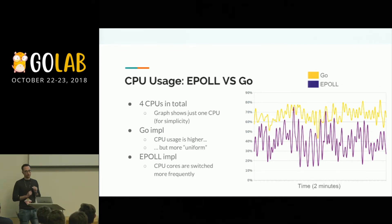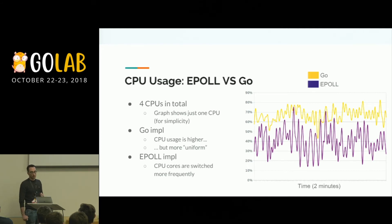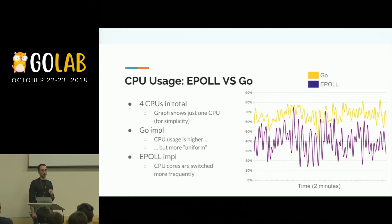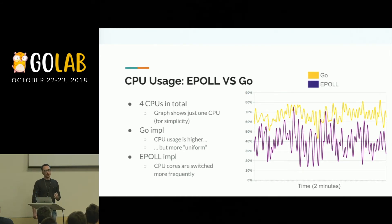I wanted to compare the two implementations: the pure Go implementation with many goroutines (the working batched-channel one) and the epoll implementation. I noticed the Go implementation uses more CPU — I plotted one core but the trend is the same for all four cores. However, for an embedded system this is not necessarily bad, because the cores are used in a more uniform way. In the epoll case the cores seem to be switching more. So I think the pure Go implementation is also correct in this context.